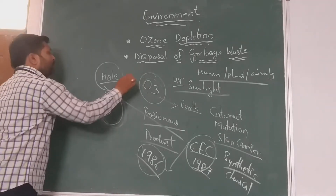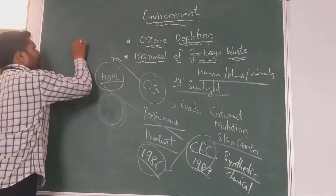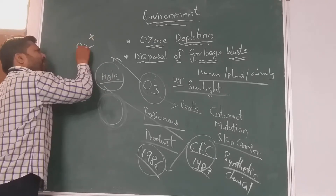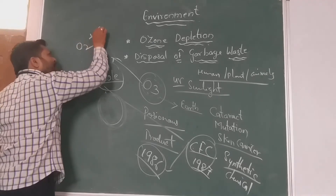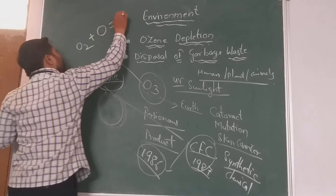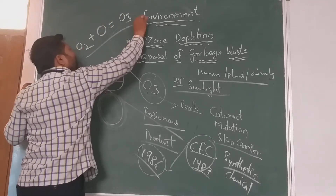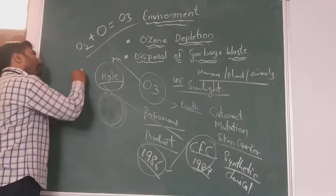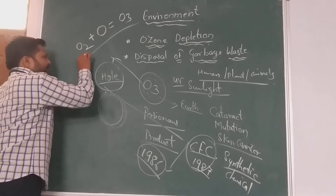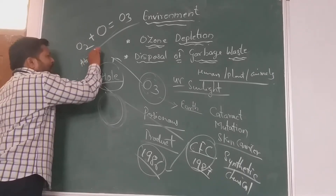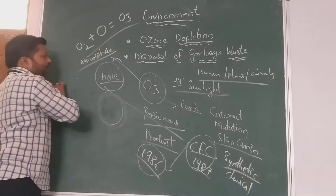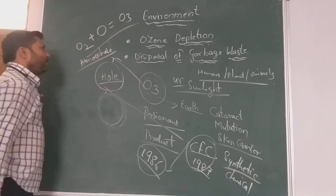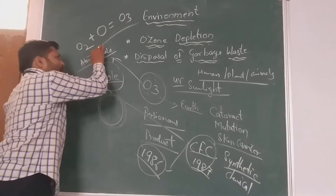This O3 is generally made up of two molecules of oxygen. O2 and O combine to form O3. This all takes place in the upper atmosphere, generally in the lower stratosphere and also in higher parts of the atmosphere. So this is the one concept.